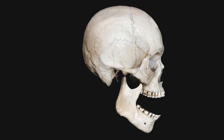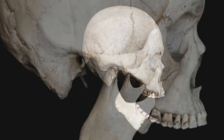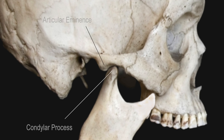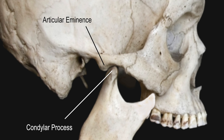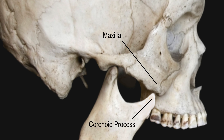A TMJ dislocation occurs when the mandibular condyle gets displaced in front of the articular eminence and becomes trapped in this position. The jaw is unable to close because the coronoid process, which normally moves deep to the zygomatic process, is now hitting the cheekbone or maxilla.